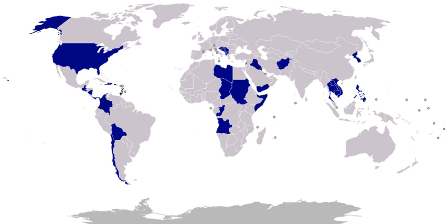1903–1904, Abyssinia, Ethiopia: 25 marines were sent to Abyssinia to protect the U.S. consul general while he negotiated a treaty. 1903–1914, Panama: U.S. forces sought to protect American interests and lives during and following the revolution for independence from Colombia over construction of the Isthmian Canal. With brief intermissions, United States Marines were stationed on the Isthmus from November 4, 1903 to January 21, 1914 to guard American interests.